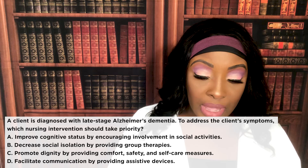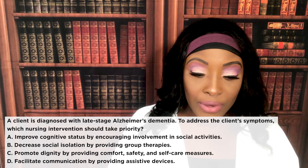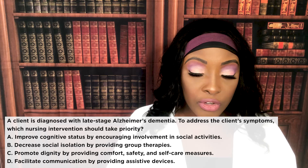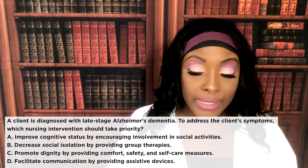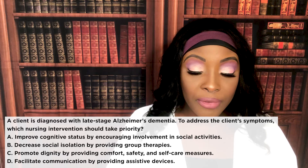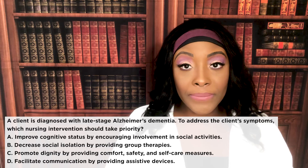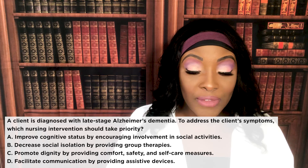A client is diagnosed with late-stage Alzheimer's dementia. To address the client's symptoms, which nursing intervention should take priority? A: Improve cognitive status by encouraging involvement in social activities. B: Decrease social isolation by providing group therapies. C: Promote dignity by providing comfort, safety, and self-care measures. D: Facilitate communication by providing assistive devices.